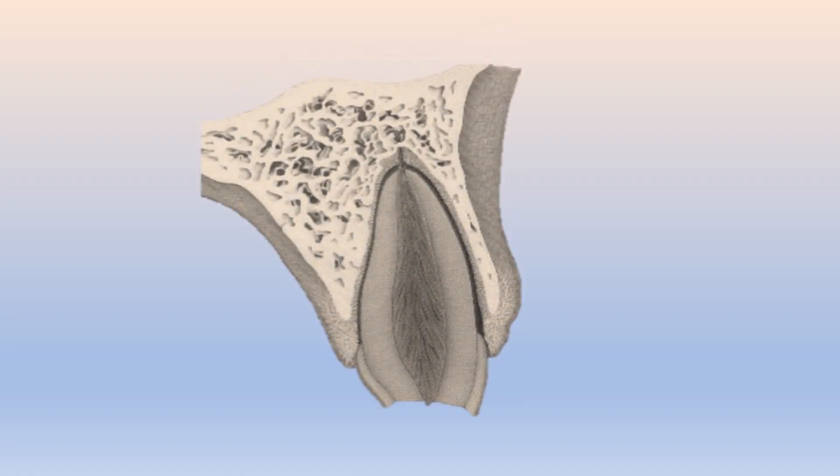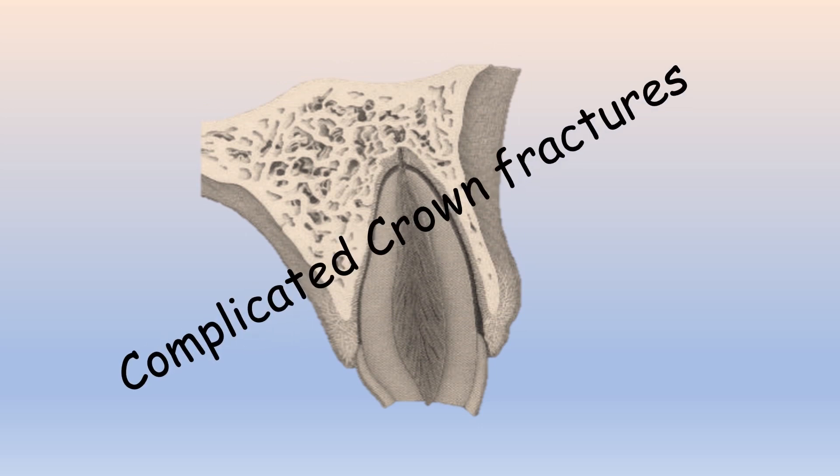We'll begin with complicated crown fractures. These are fractures which involve the enamel, dentine, and the pulp.